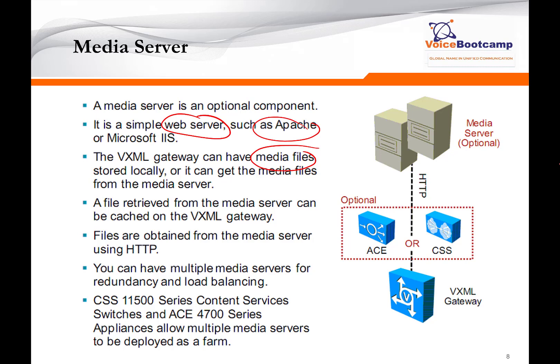When a file is retrieved from the media server, it can be cached locally on the IOS VXML gateway. You can have multiple media servers for redundancy and load balancing, and a CSS 11000 content service switch — for example, you can use the 11500 series or ACE 4700 series — to do load balancing across multiple media servers.